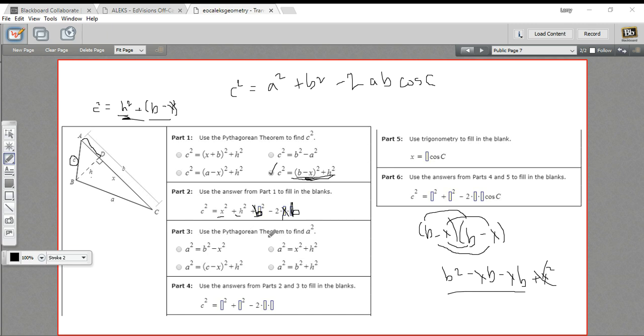All right, let's go on to part three. This says, use the Pythagorean theorem to find a squared. So let's look back at the diagram again. Here's a. And if we look at this right triangle, a is the hypotenuse. So a squared is going to equal the other two sides squared. So h, again, is one of them. And the other one is x here. So h squared plus x squared.